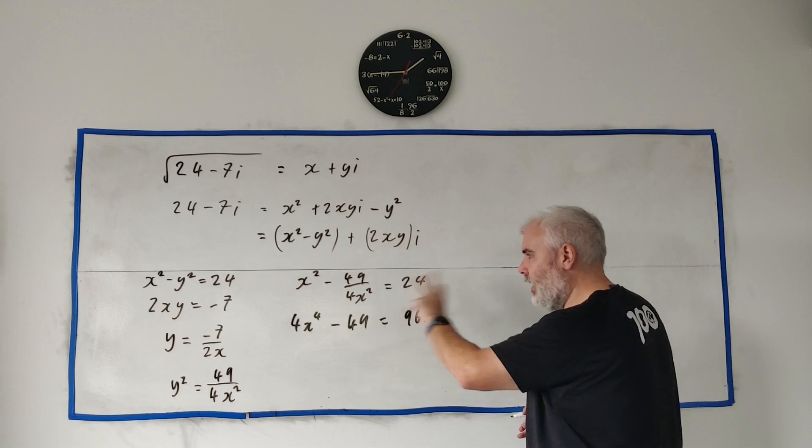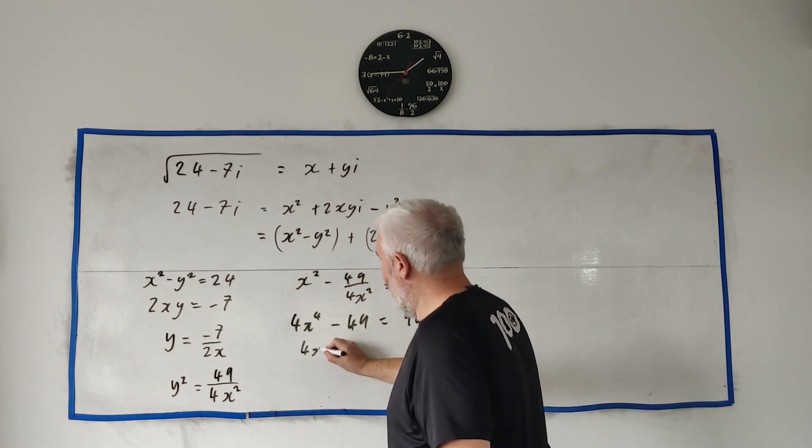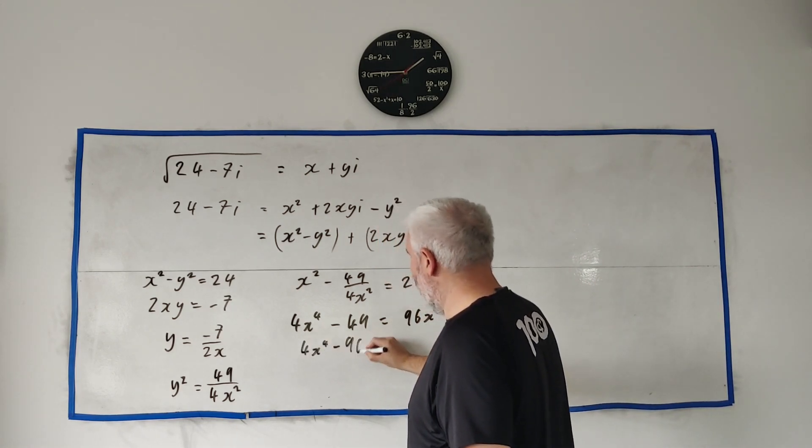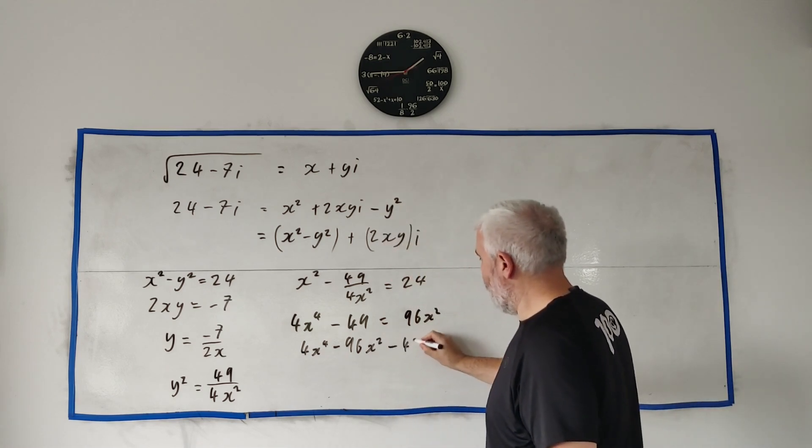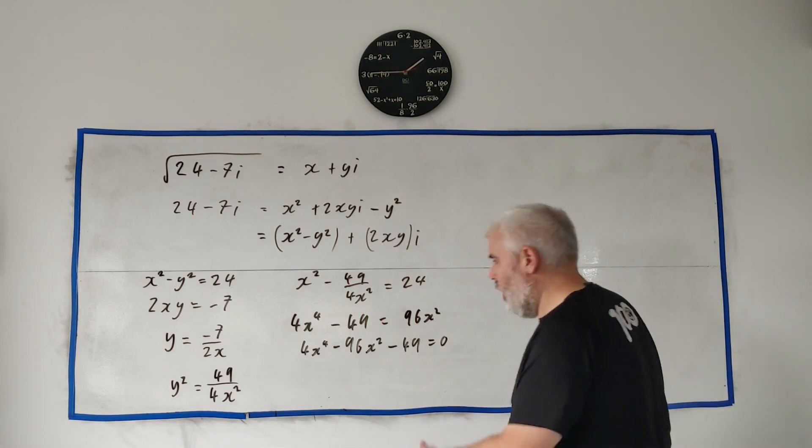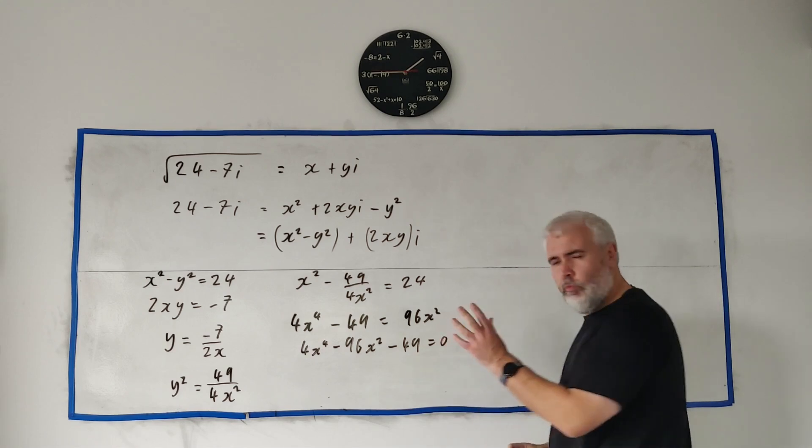Still not quite a quadratic I think. Let's rearrange everything on the left: 4x to the power 4 minus 96x squared minus 49 equals zero. Okay, a lot more like a quadratic now.